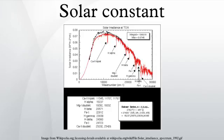The approximate average value cited, 1.3608 ± 0.0005 kilowatts per square meter, which is 81.65 kilojoules per square meter per minute, is equivalent to approximately 1.951 calories per minute per square centimeter.